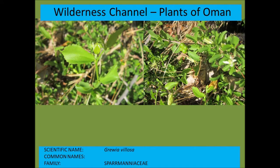Grewia villosa is another species. You can see the berry on the right-hand side — it has four lobes, and they're sometimes called crossberries in southern Africa for that reason.